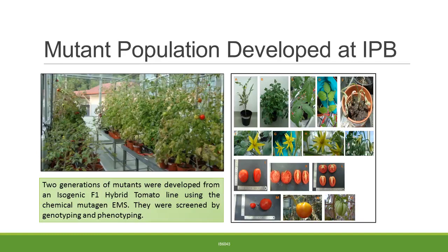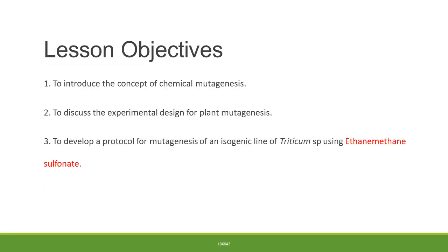Some of the plants exhibited a decline in the degree of chlorophyll pigment in the leaves. Today's lesson plan focuses on the following objectives: the first is to introduce you to the concept of chemical mutagenesis; the second is to discuss the experimental design for plant mutagenesis using a chemical; and the third is to develop a protocol for mutagenesis of an isogenic line of Triticum species using ethylmethanesulfonate.